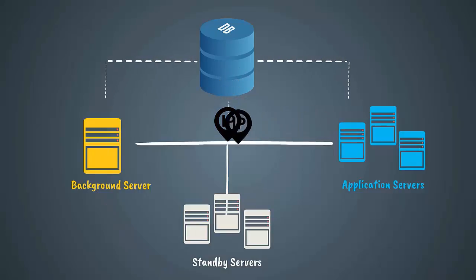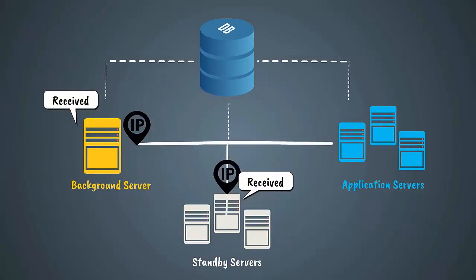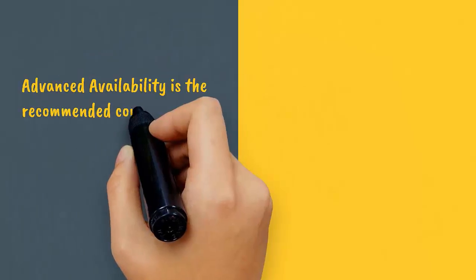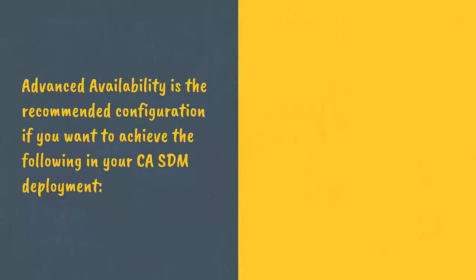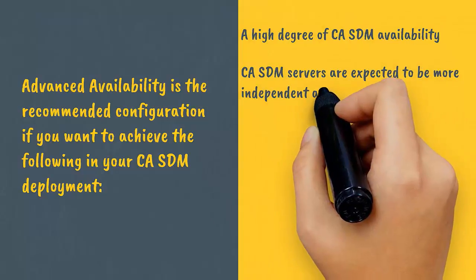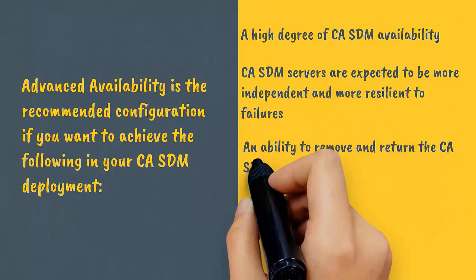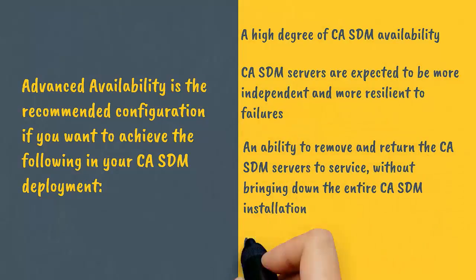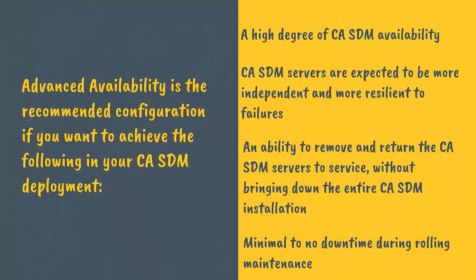All these components communicate using an internal CA protocol. Advanced Availability is the recommended configuration if you want to achieve a high degree of CASDM availability, where servers are more independent and resilient to failures, with the ability to remove and return servers without bringing down the entire installation, and minimal to no downtime during rolling maintenance.